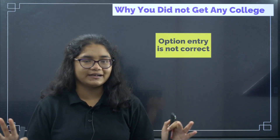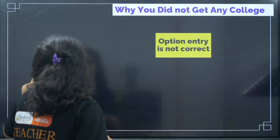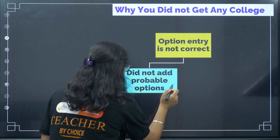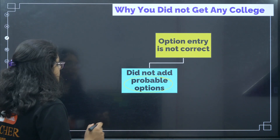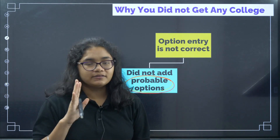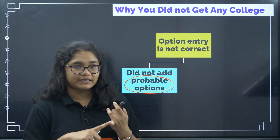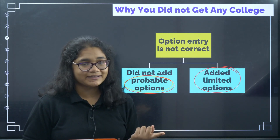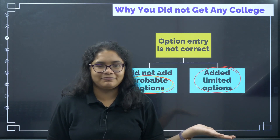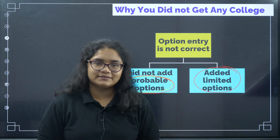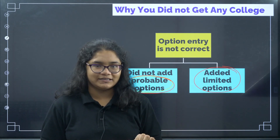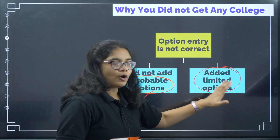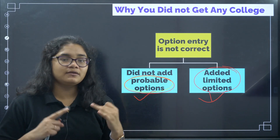The main reason why you did not get a seat is your option entry is not correct. There can be two mistakes: first, you did not add probable options — those colleges where you had a probability of getting a seat. Second, adding a limited number of options — maybe you were overconfident that five to seven options would be enough. The past is gone; we have to work on our mistakes. If we solve these two problems, our option entry will be better and we can get a college in the next allotment.